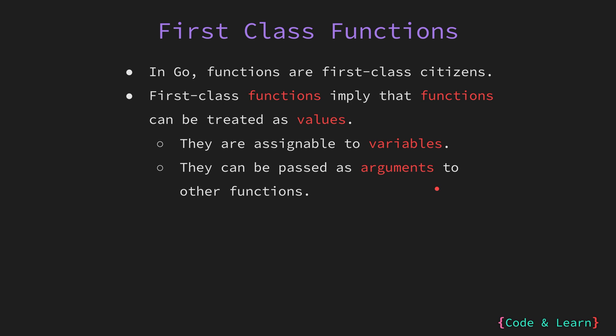You can pass a function as an argument to another function. This is a powerful concept because it allows you to create higher order functions, which are functions that operate on other functions. In Go, a function can also be returned from another function. This means you can create functions that generate and return other functions based on your input.